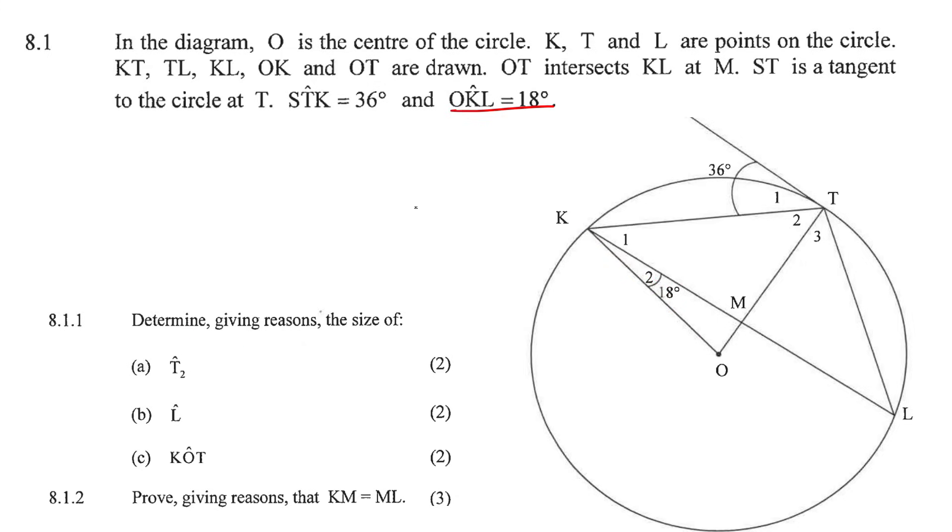Determine, giving reasons, the size of angle T2. Well, we know that this is a radius, because any line from the center of a circle to the outside is a radius.